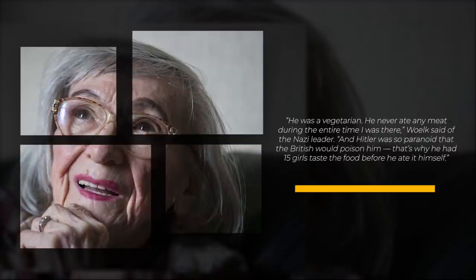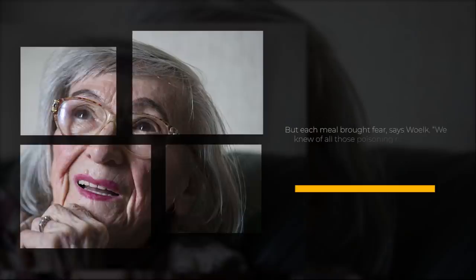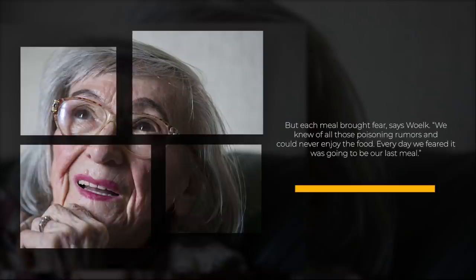He never ate any meat during the entire time I was there, Wölk said of the Nazi leader. And Hitler was so paranoid that the British would poison him, that's why he had 15 girls taste the food before he ate it himself. But each meal brought fear, said Wölk.